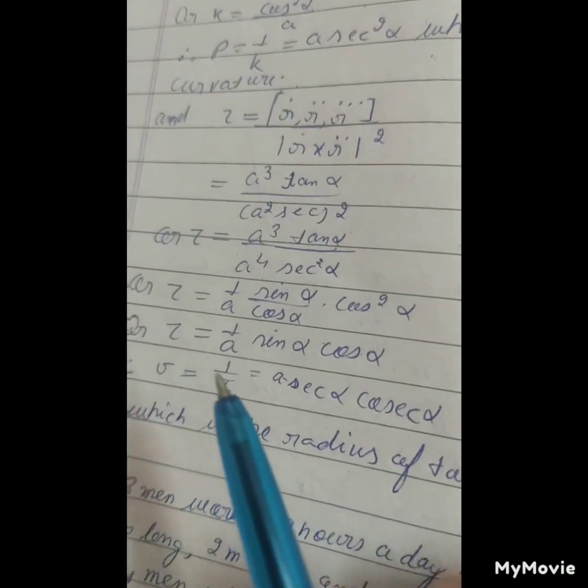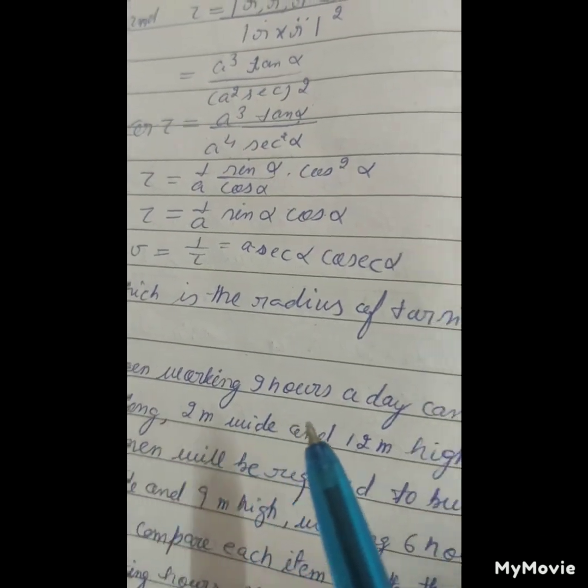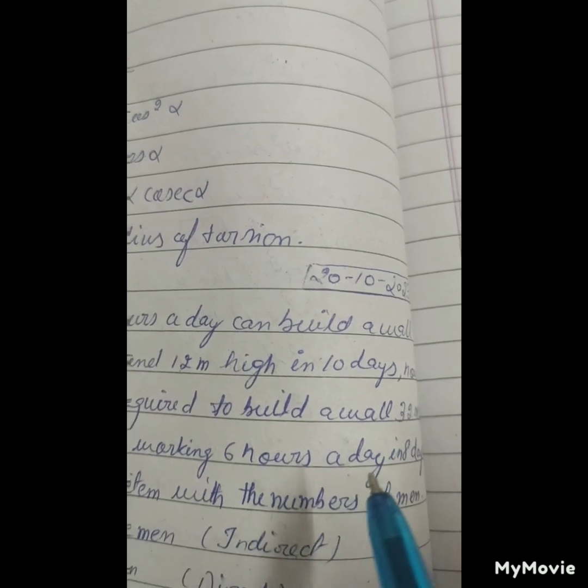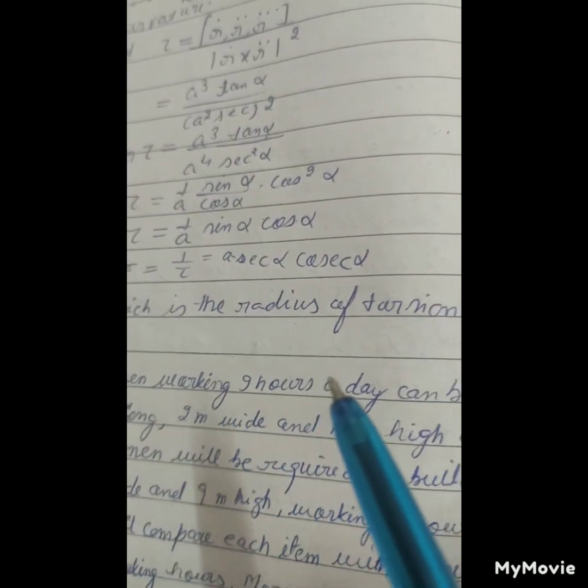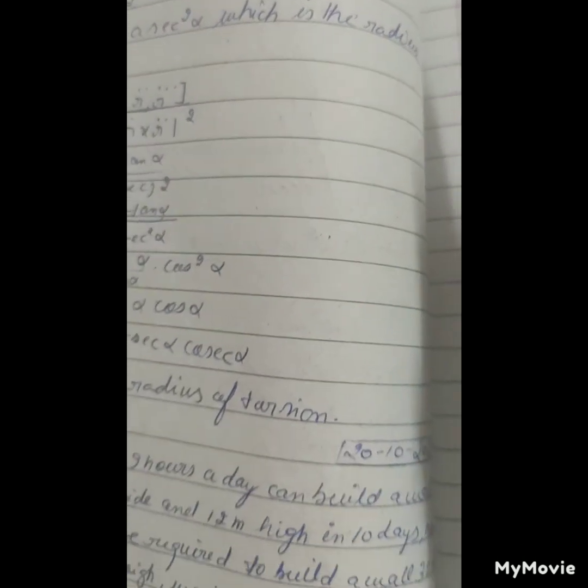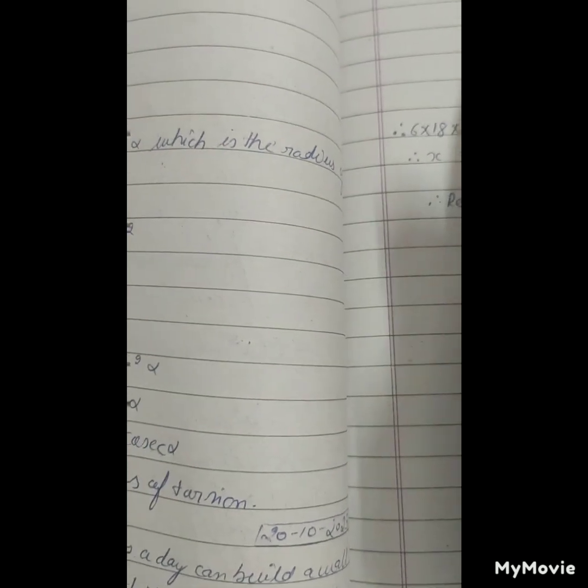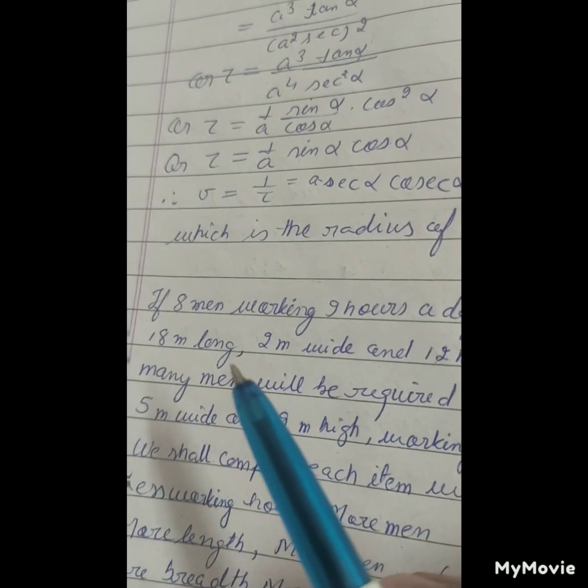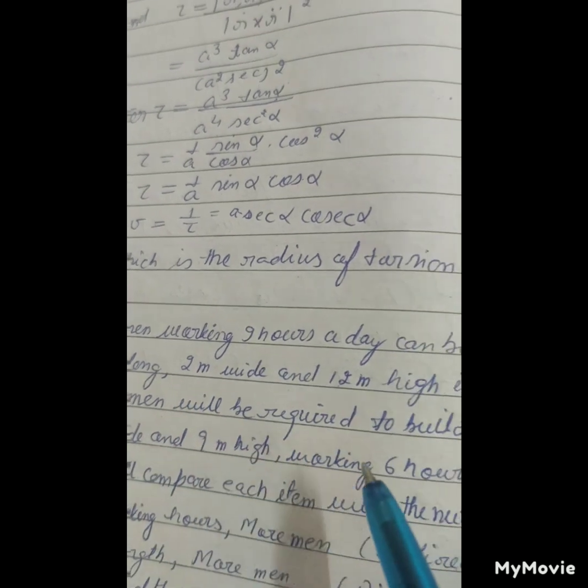So working hours: 6 and 9 hours, so 6 is to 9. Length: 18 is to 13... 18 in first case.